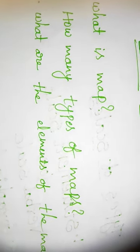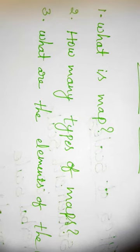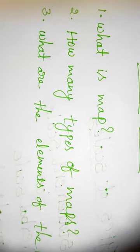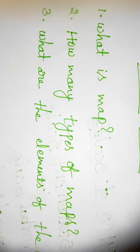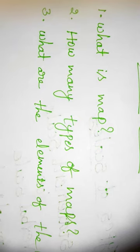Complete the worksheet. Three easy questions for you: the first is, what is a map? The second is, how many types of maps are there? And the third is, what are the elements of maps? Okay, children. Thank you. Bye.